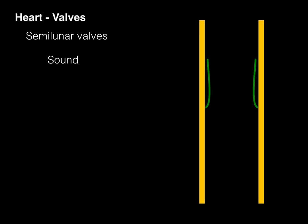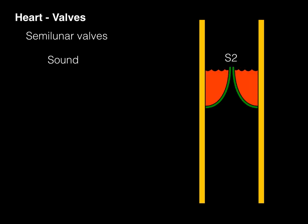Now the sound, when this thing closes, it makes a slap shut as well. The second sound, lub-dub, is this S2 or second heart sound. In listening to heart valve sounds using a stethoscope, S1 is the closing of the AV valves, S2 is the closing of the semilunar valves.